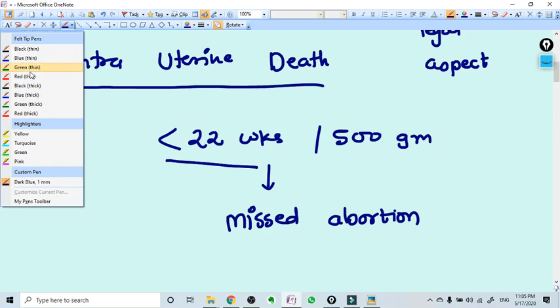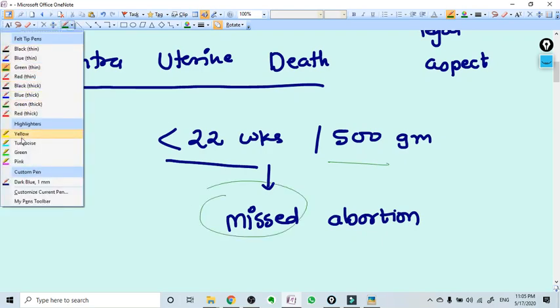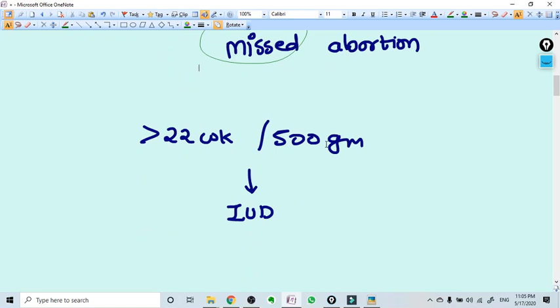If the weight is more or less than 500 grams, then it's called missed abortion. So remember this figure: 22 weeks and 500 grams. If it is less than this, one or two, it will be called a missed abortion.